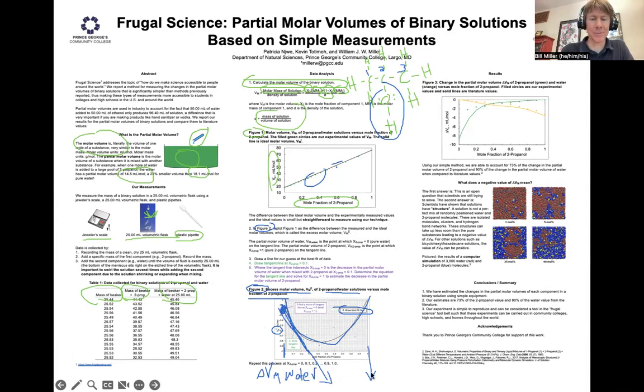And if we take this line and extend it all the way over to where x equals 1, that's pure 2-propanol, and you can estimate the change in the molar volume of the 2-propanol. And I've got some details about this on here for number 5 here. We actually figured out the equation of this line and solved for where x equals 1, x being the mole fraction, to find those values. Then we plotted them in figure 3.